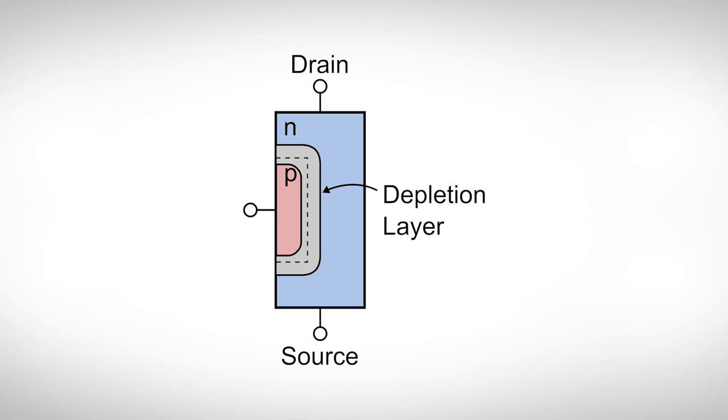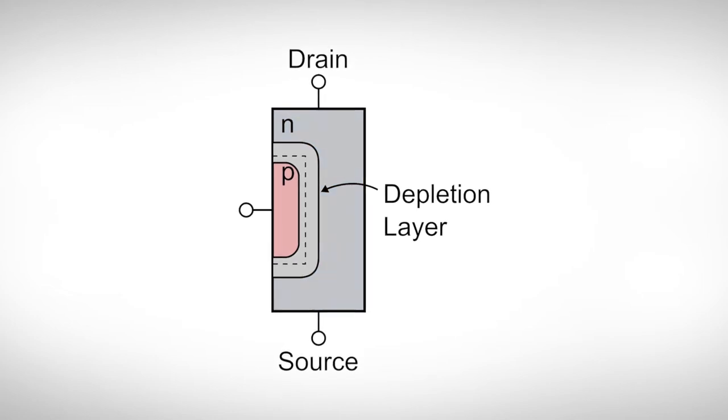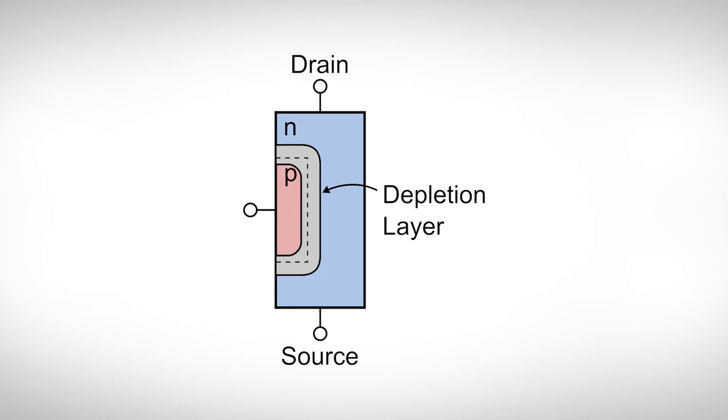But how do we control the current flow? The second region is P-doped for an N-channel device and inversely doped for a P-channel device. A P-N junction is formed at the boundary and along with it an electric field. This electric field removes mobile charge carriers and creates the depletion layer. As there are no mobile charge carriers in the depletion layer, no current can flow through it.